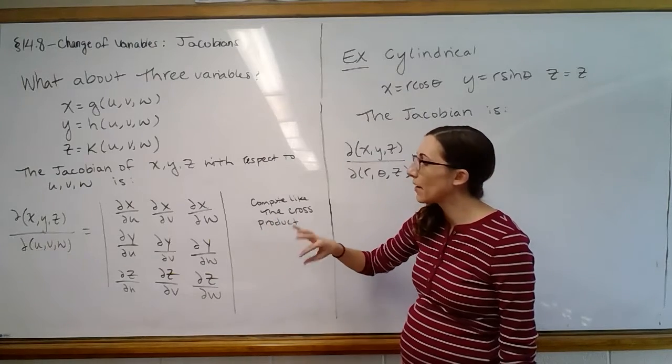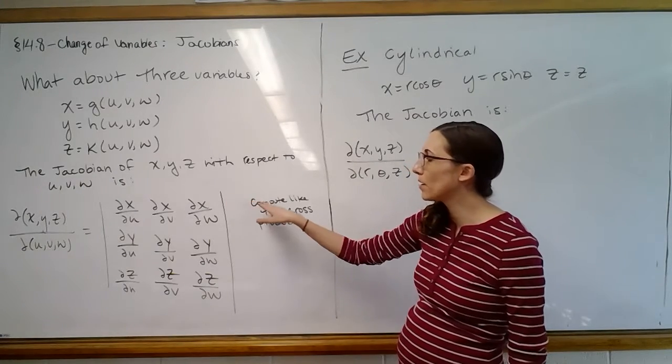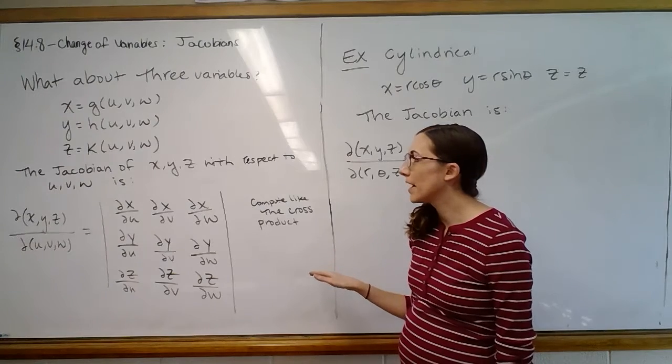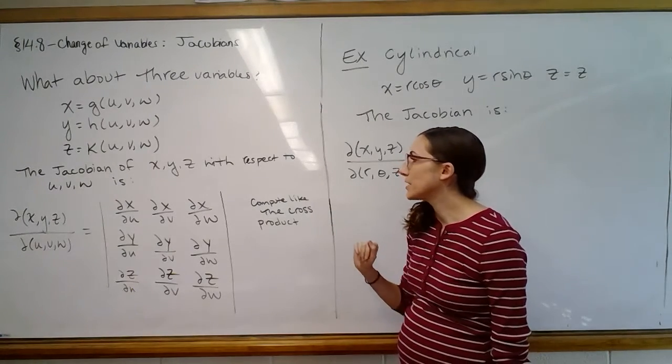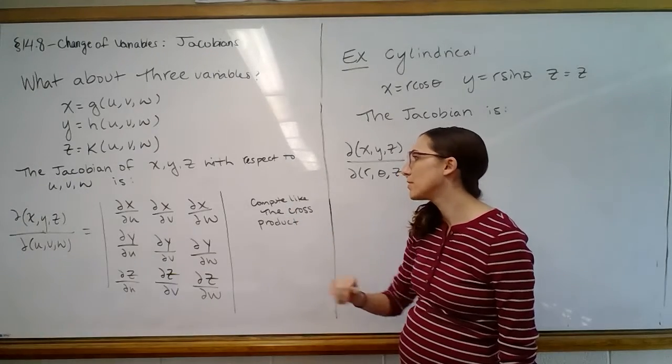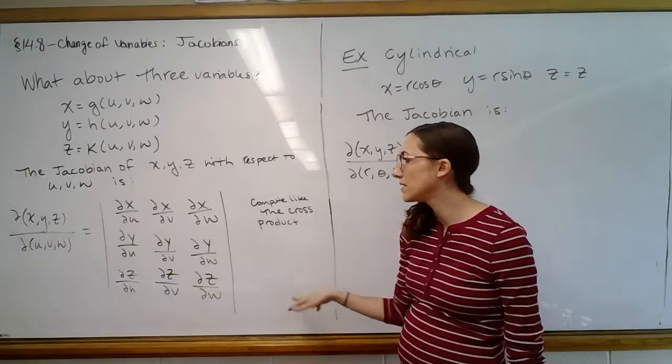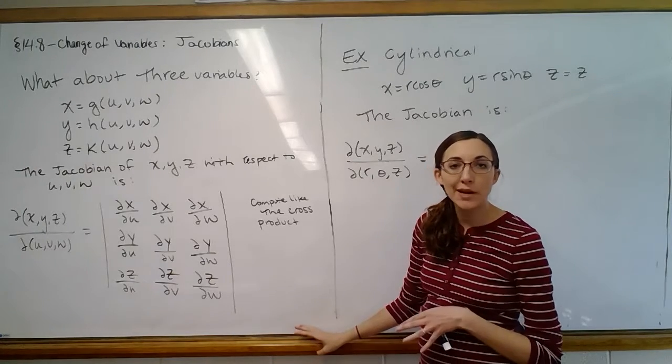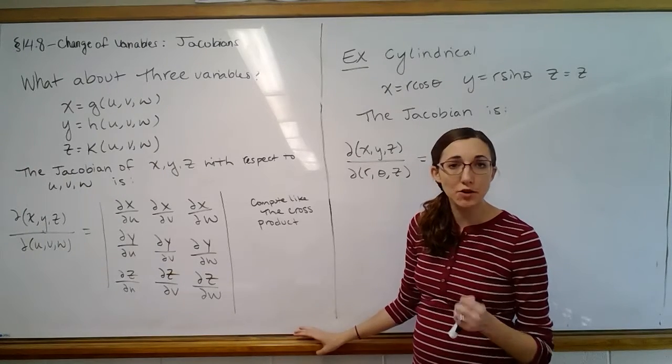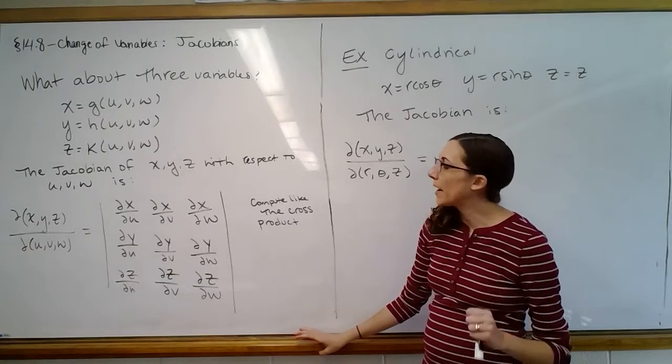And then my determinant just gets larger, so now we have a three by three. The top row is all of the partials of x: partial of x with respect to u, partial of x with respect to v, partial of x with respect to w. The next row is all the y's, and then all the z partials. And you compute this determinant the same way that we did the cross product in the past.